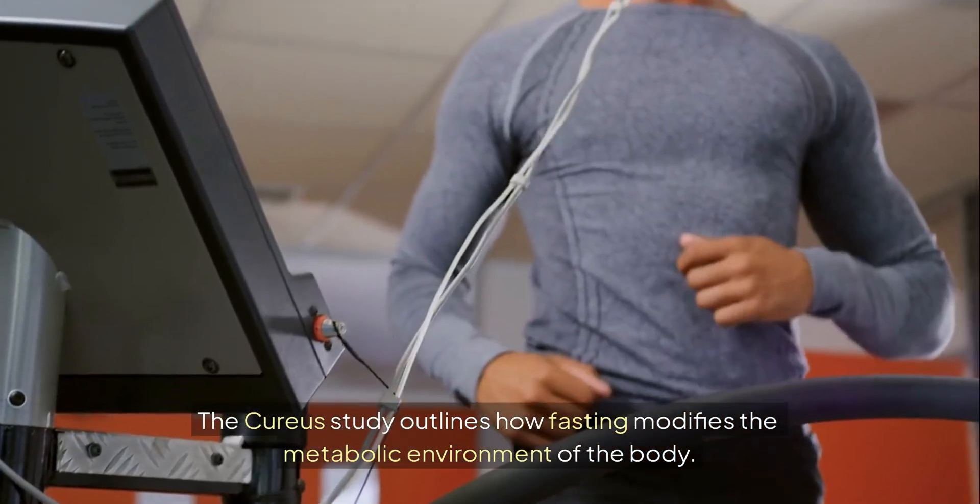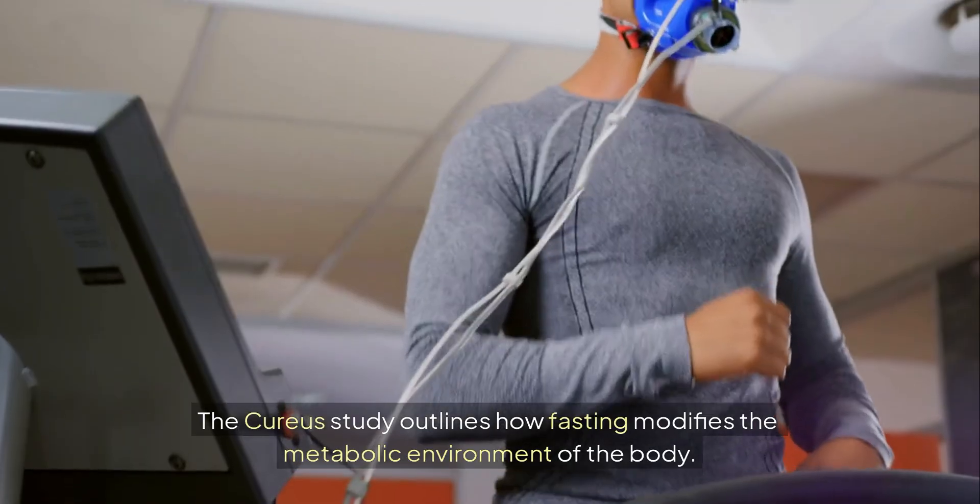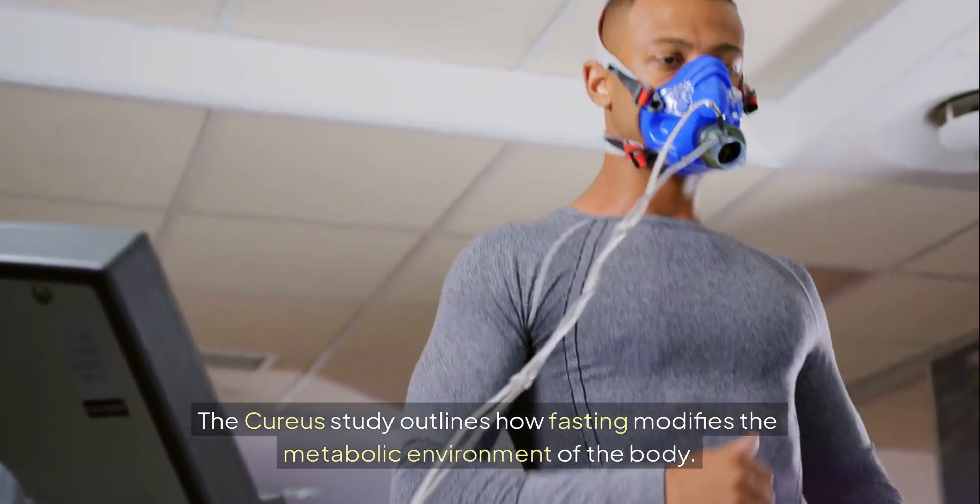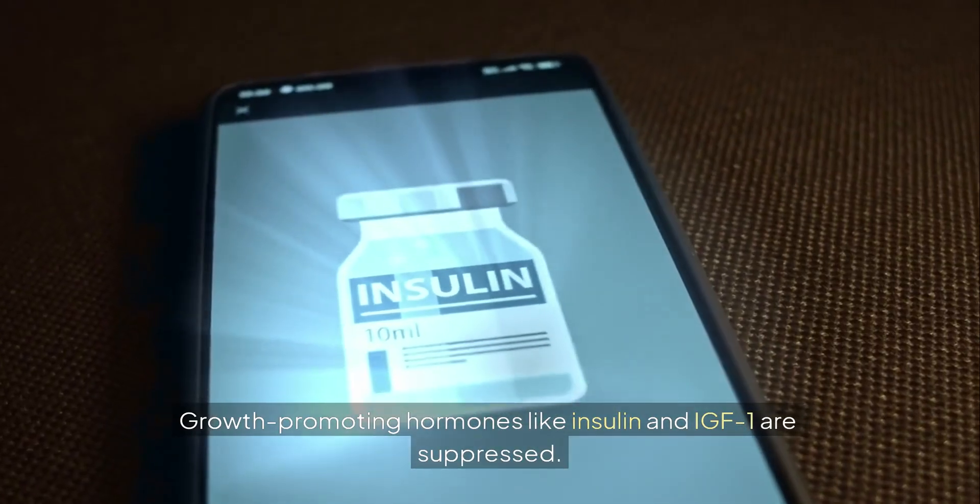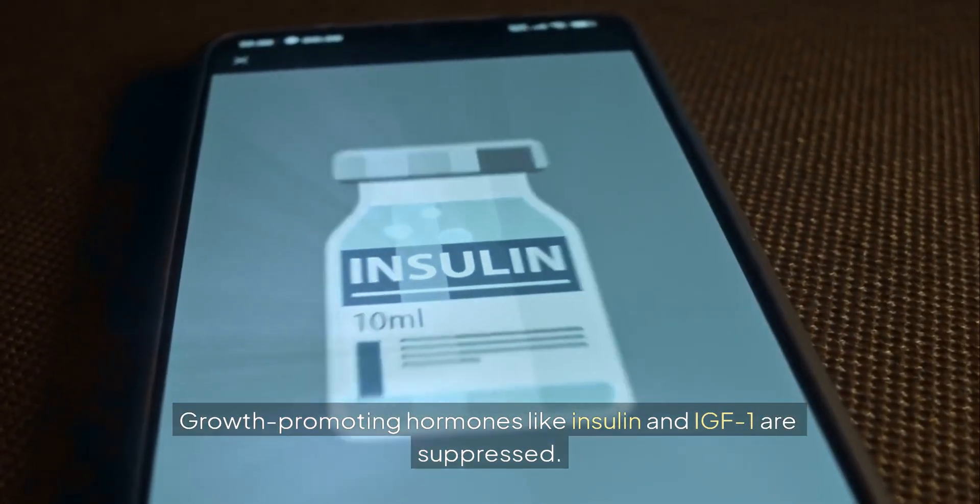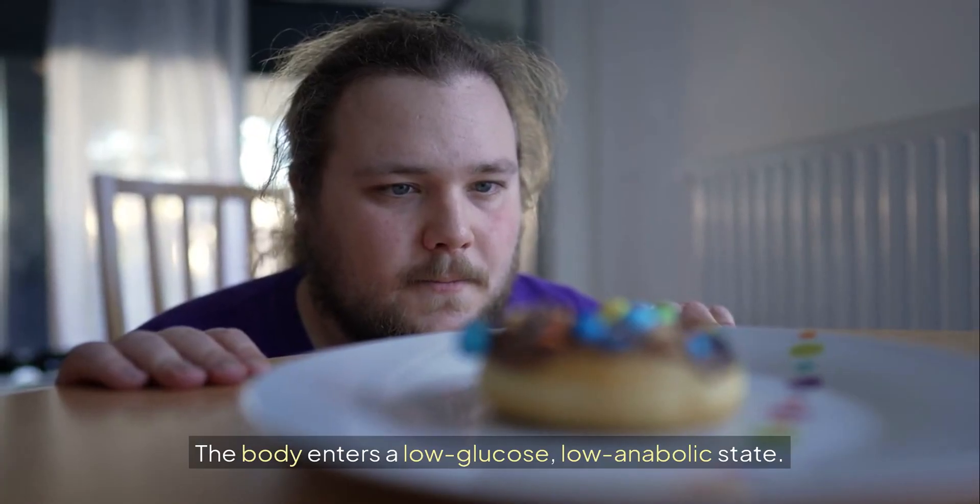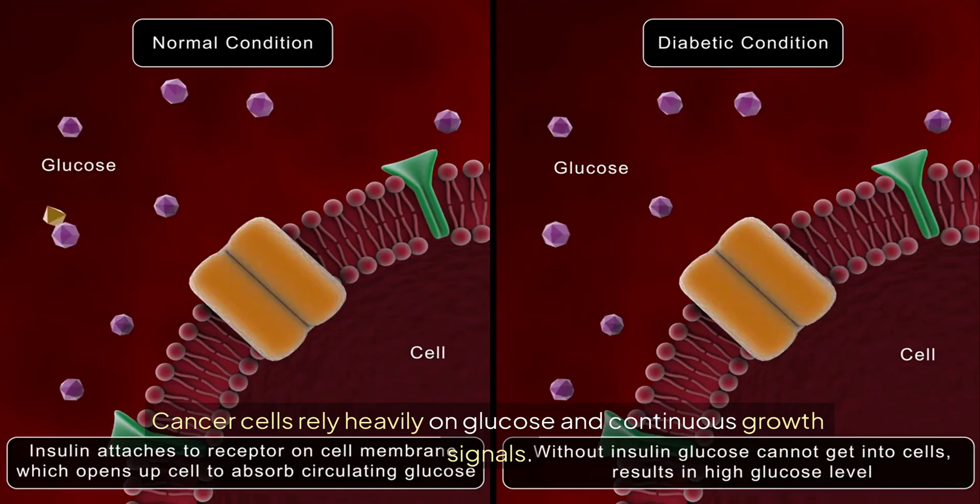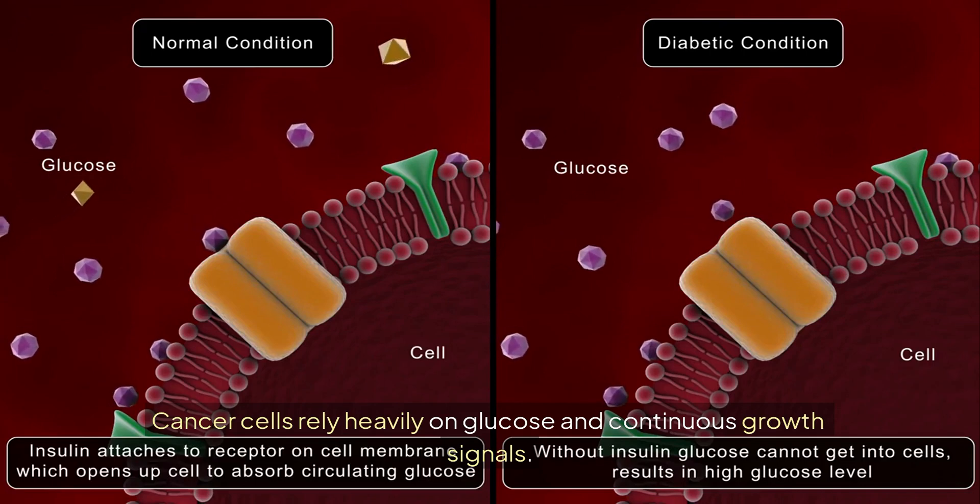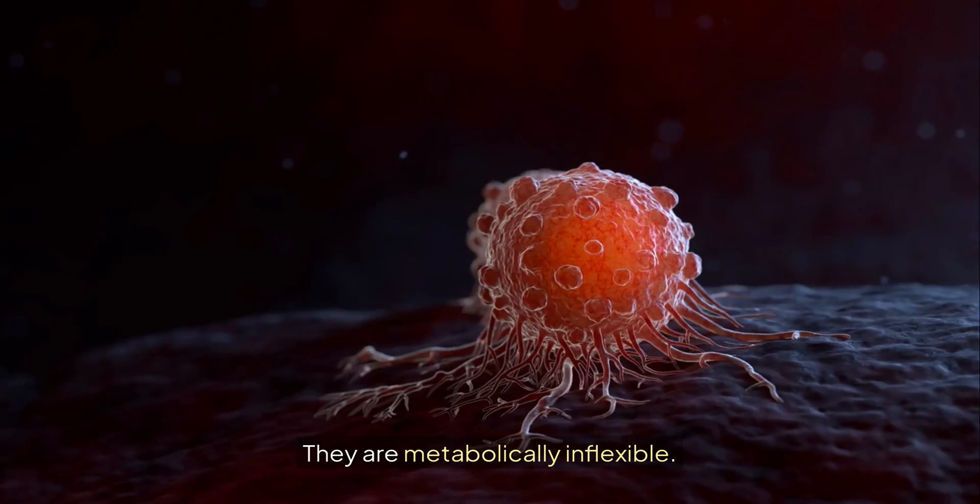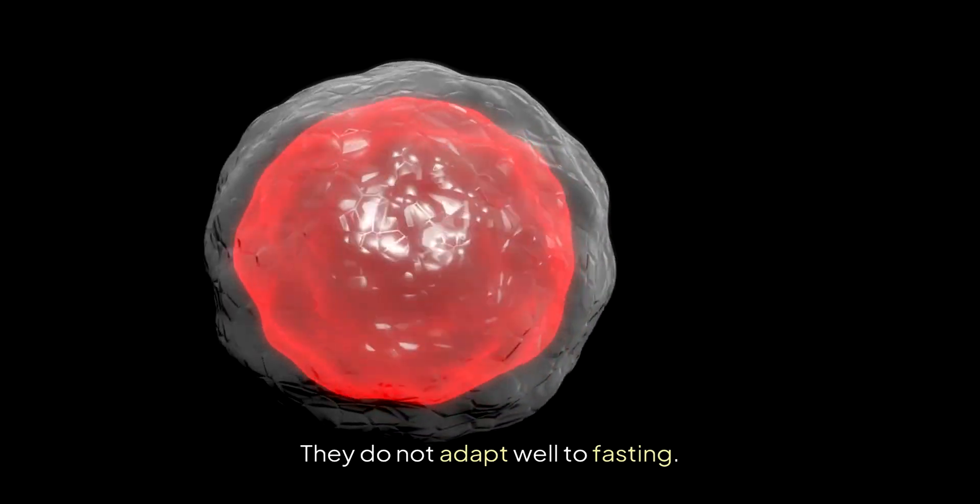The CURIOUS study outlines how fasting modifies the metabolic environment of the body. Growth-promoting hormones like insulin and IGF-1 are suppressed. The body enters a low-glucose, low-anabolic state. Cancer cells rely heavily on glucose and continuous growth signals. They are metabolically inflexible. They do not adapt well to fasting.